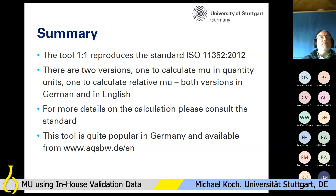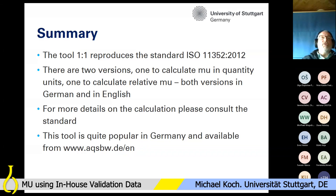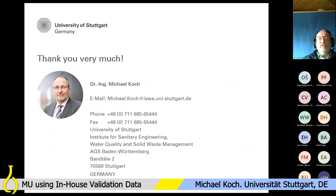To sum up: the tool reproduces ISO 11352 one by one. There are two versions — one to calculate measurement uncertainty in quantity units for the low concentration range, and one to calculate relative measurement uncertainty — and both versions are available in German and in English. For more details on the calculation, please consult the standard. This tool is quite popular in Germany, recommended by many accreditation auditors, and is available free of charge from our website. Thank you very much for your attention and I'm happy to answer questions.